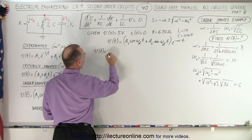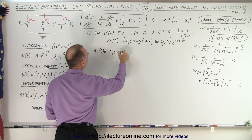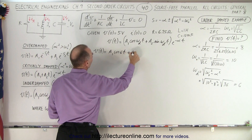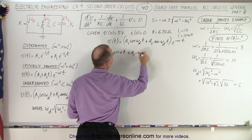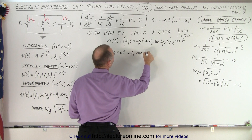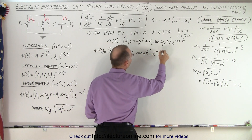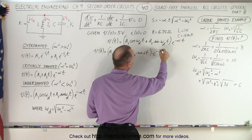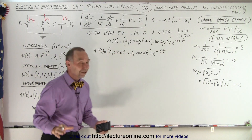Plugging the values into our equation, the voltage as a function of time is equal to A1 times the cosine of 6t plus A2 times the sine of 6t, all multiplied by e to the minus 8t. We're still left with finding A1 and A2.